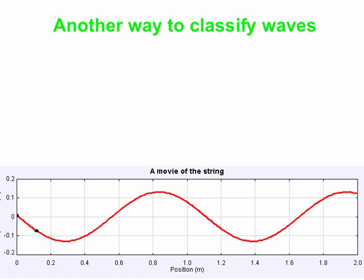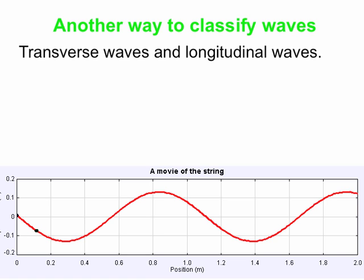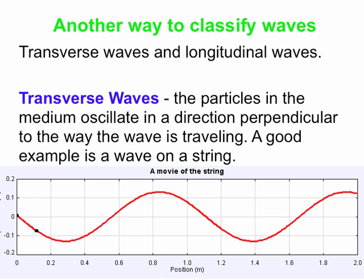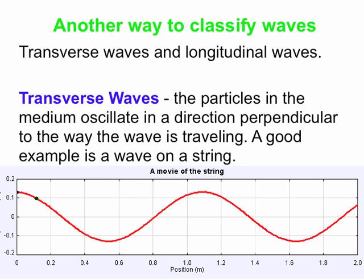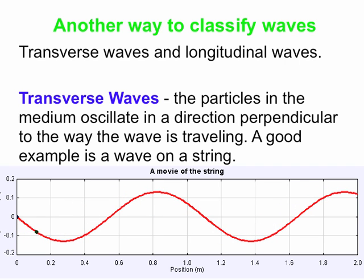Another way to classify waves is into two different things called transverse waves and longitudinal waves. In a transverse wave, the particles of the medium oscillate in a direction perpendicular to the wave, to the way the wave is traveling. A good example of this is a wave on a string. Imagine a very long string and you're wiggling the left end. You can see the wave propagating but the particles of the medium itself just actually go up and down. The energy carried by that wave is carried to the right, so the traveling wave to the right. But the particles of the medium just oscillate up and down.